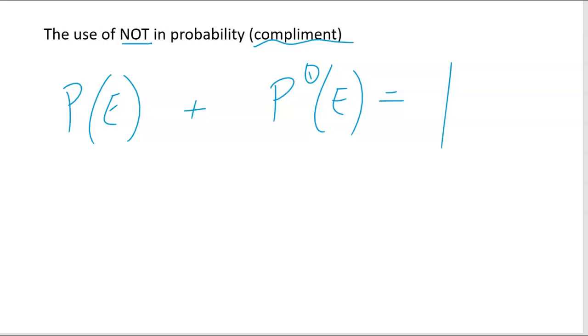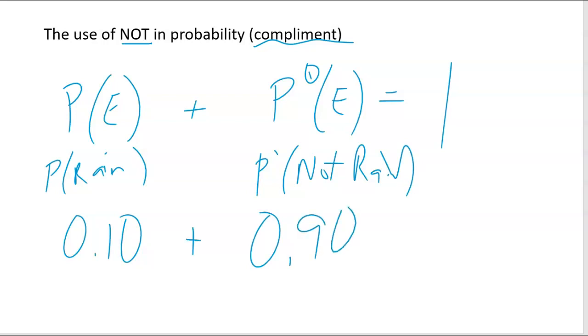So let's say the probability of rain. Let's say the event is rain. So the probability that it's going to rain is 10%. That means the probability that it's not going to rain, so this is the probability of not rain, would be everything else, which is 90%. And 10% plus 90% gives me one. So the idea of complement is that the two pieces together will give you one, which is why if we know one of these probabilities, we can subtract from one to find the other.